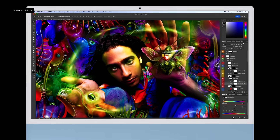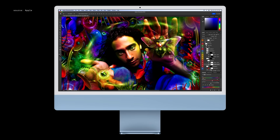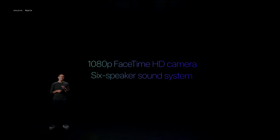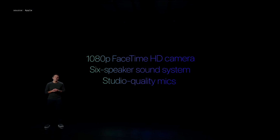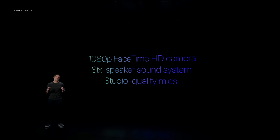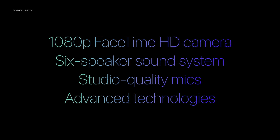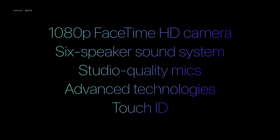Whichever model you're coming from, you'll appreciate the enormous amount of screen real estate on the new iMac display. Along with 11 million pixels, 500 nits of brightness, and over a billion colors, you also get great features like a 1080p FaceTime camera, a six-speaker sound system with spatial audio, and studio-quality mics, which create an unmatched video conferencing experience. In addition, you'll also get the advanced technologies of Apple Silicon, like the Neural Engine and Media Engine, for incredible machine learning and video performance, and the option to choose a Magic Keyboard with Touch ID for secure login and payments.